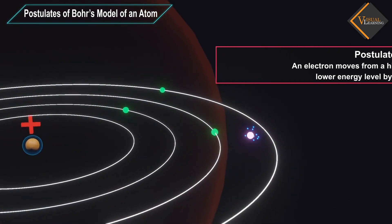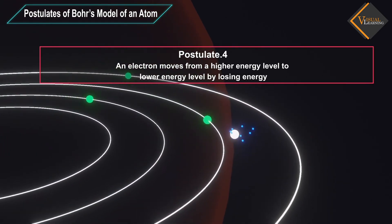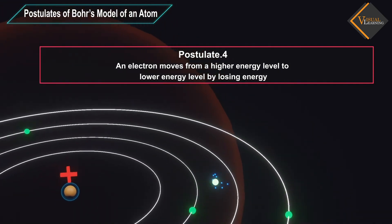And an electron moves from a higher energy level to a lower energy level by losing energy.